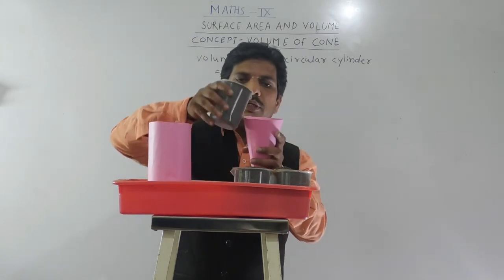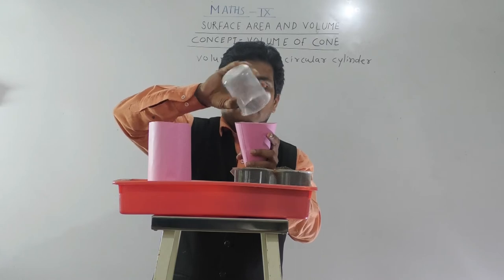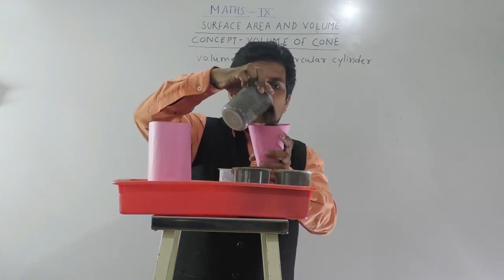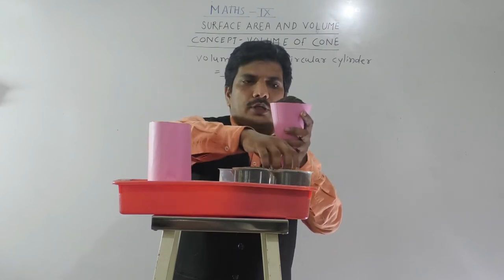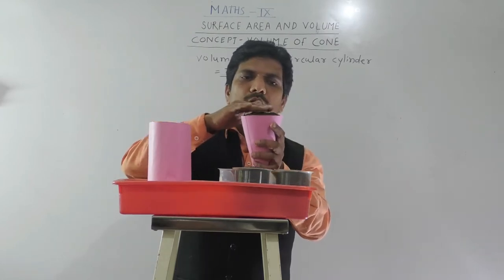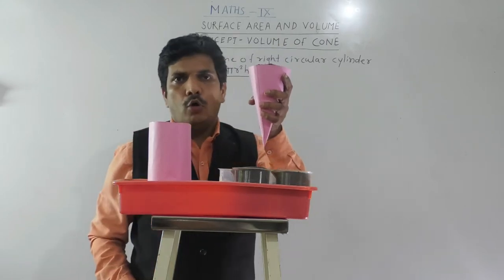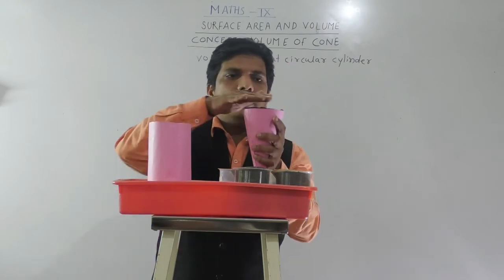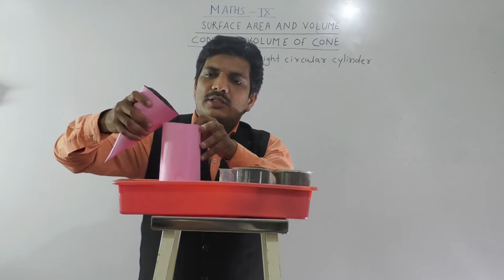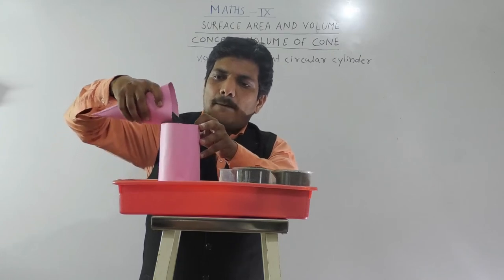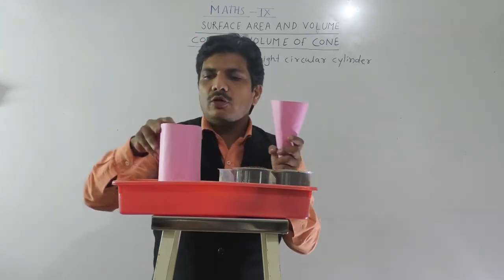First time, I am taking sand and filling the cone. The volume means the capacity of the container — that is known as volume. I have taken one cone full of sand and I am going to empty it into the cylinder. Still, there is a lot of space remaining in the cylinder.